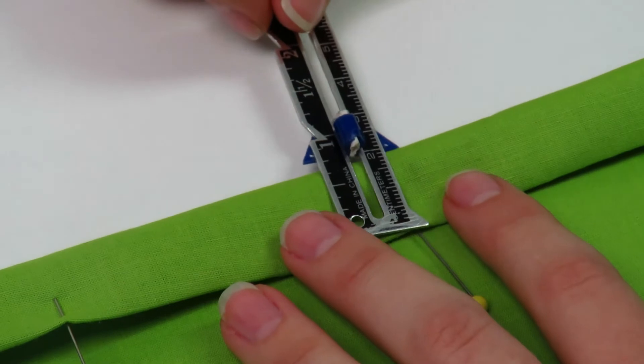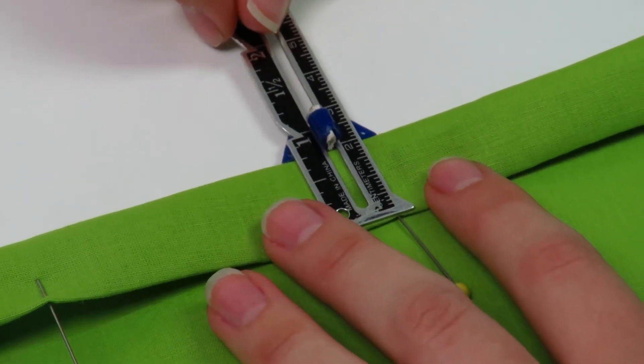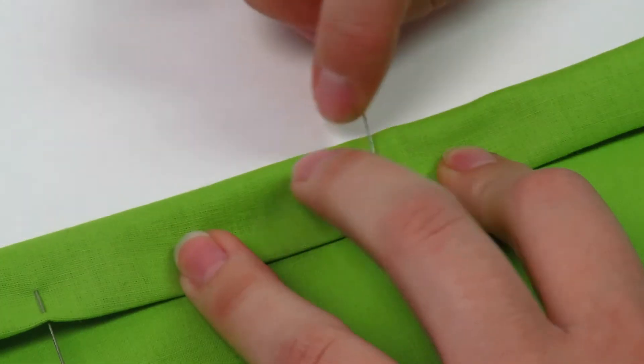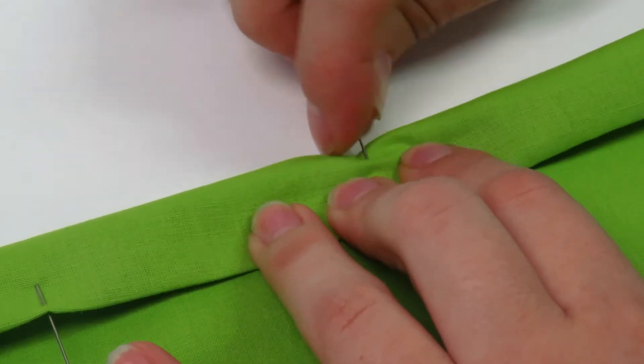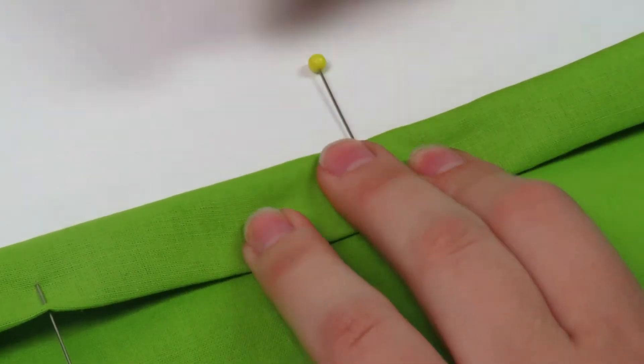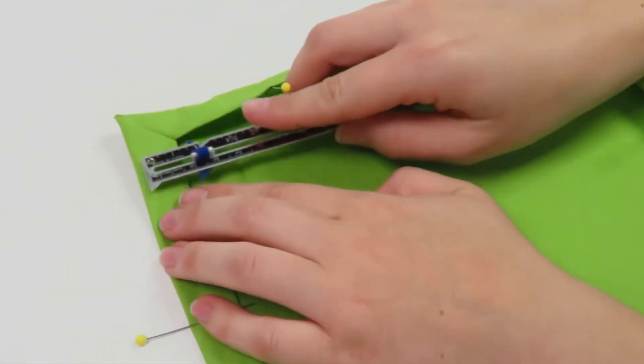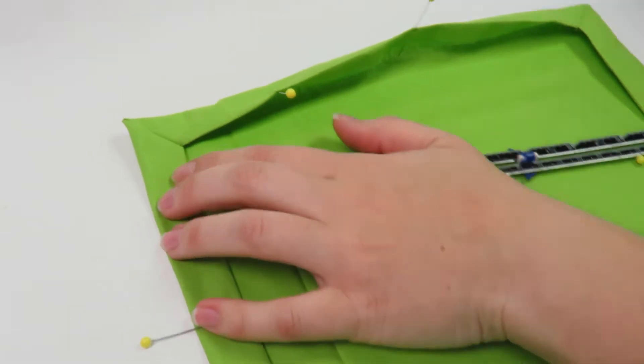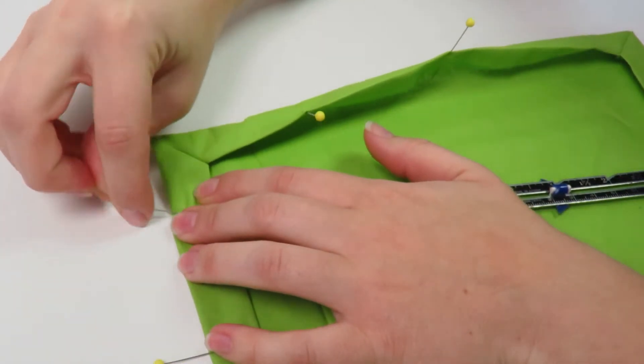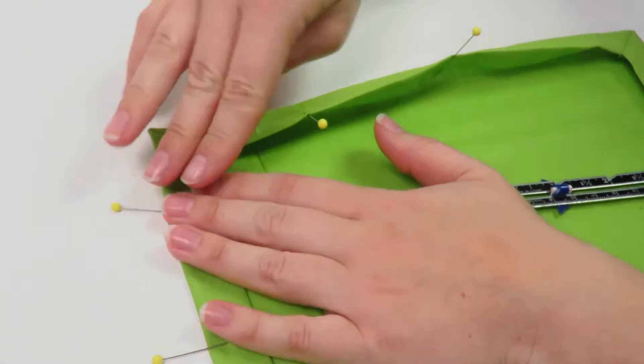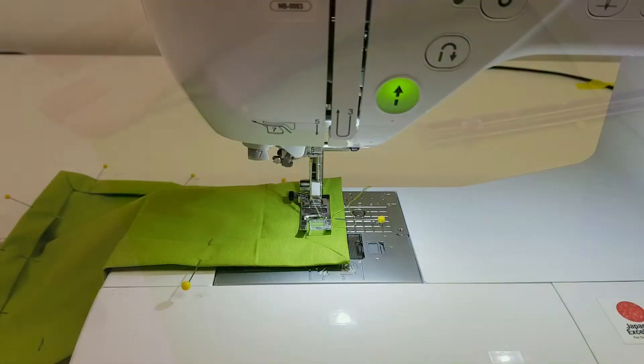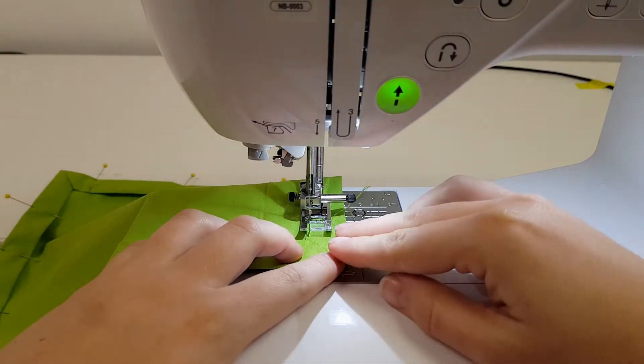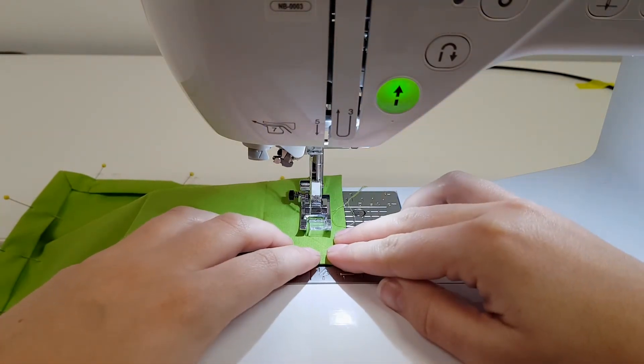Measure the second seam allowance of two centimeters and pin it all around the serviette. Stitch the second seam allowance in place using either a decorative or a straight stitch.